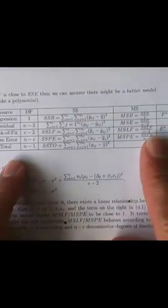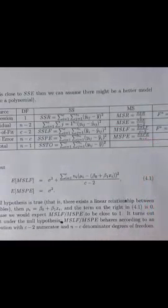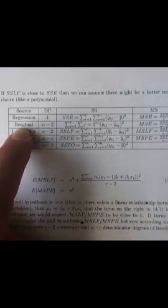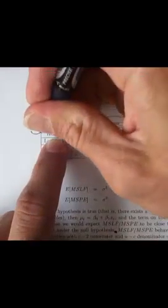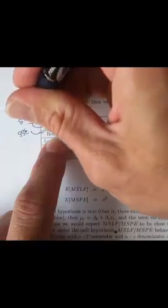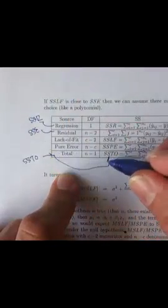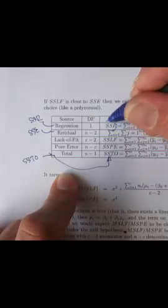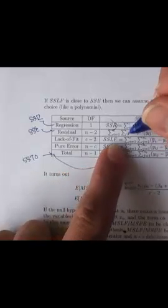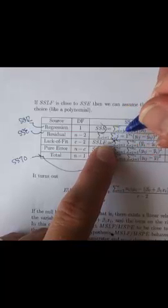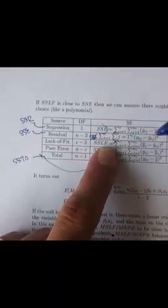And essentially, here's a lack of fit sum of squares table. It's a sum of squares table, just like we've seen before with our regression sum of squares and our residual sum of squares or error sum of squares. This is SSTO. This is SSR, and this is SSE. The two new rows here are this lack of fit and this pure error stuff.